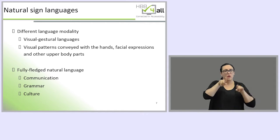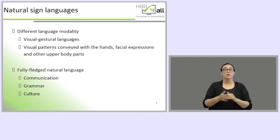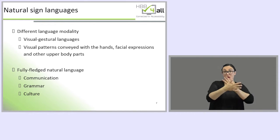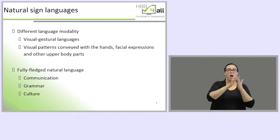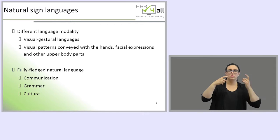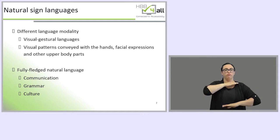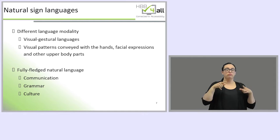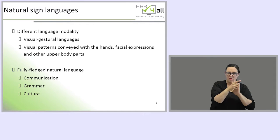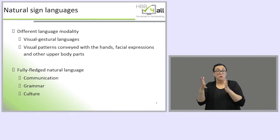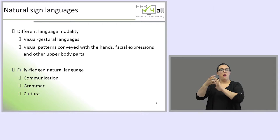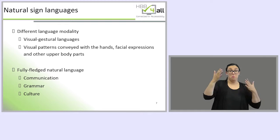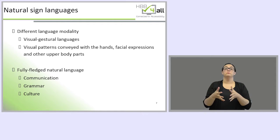Sign languages are natural languages just like any spoken language, but they differ in the language modality they use. Sign languages are visual-gestural languages and they use articulators like the hands, the arms, facial expression — eyebrow position, mouthings — head tilts, and upper body parts like shoulder and torso positions to convey meaning and grammar at all linguistic levels. This is similar to spoken languages, but in spoken languages we use the vocal tract, mouth, lips, and tongue. The structure is similar across both language modalities.